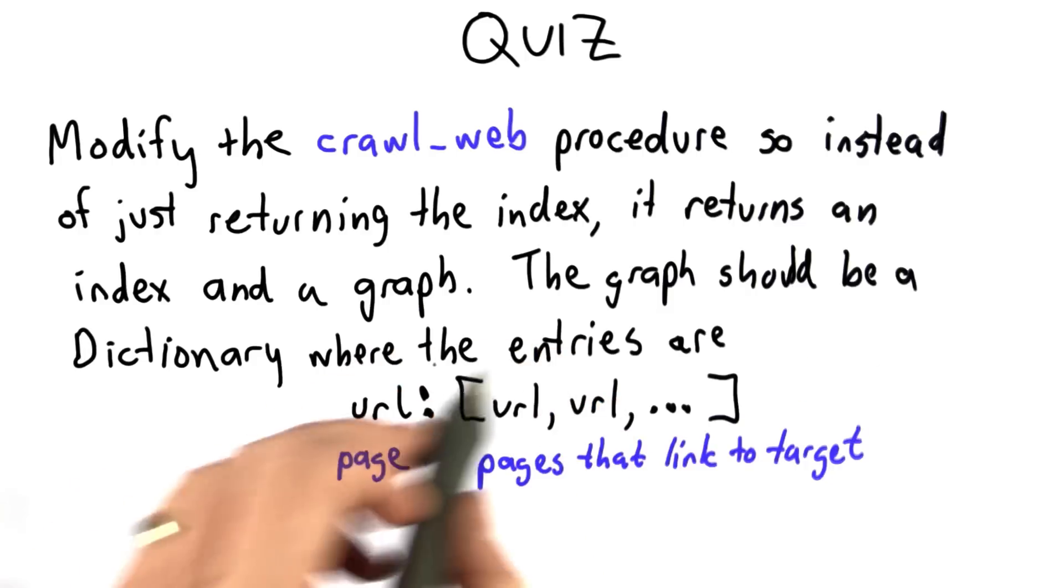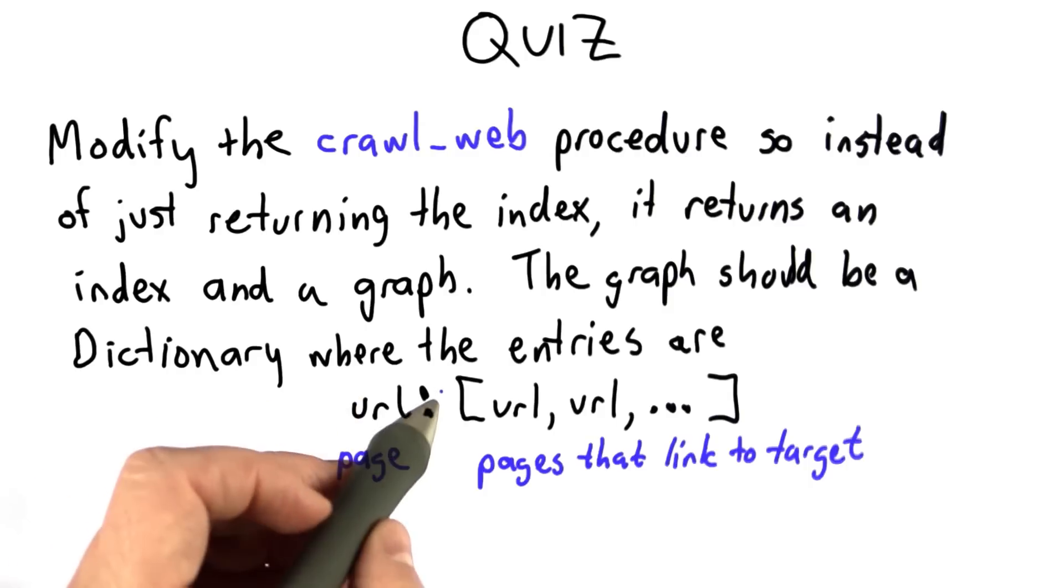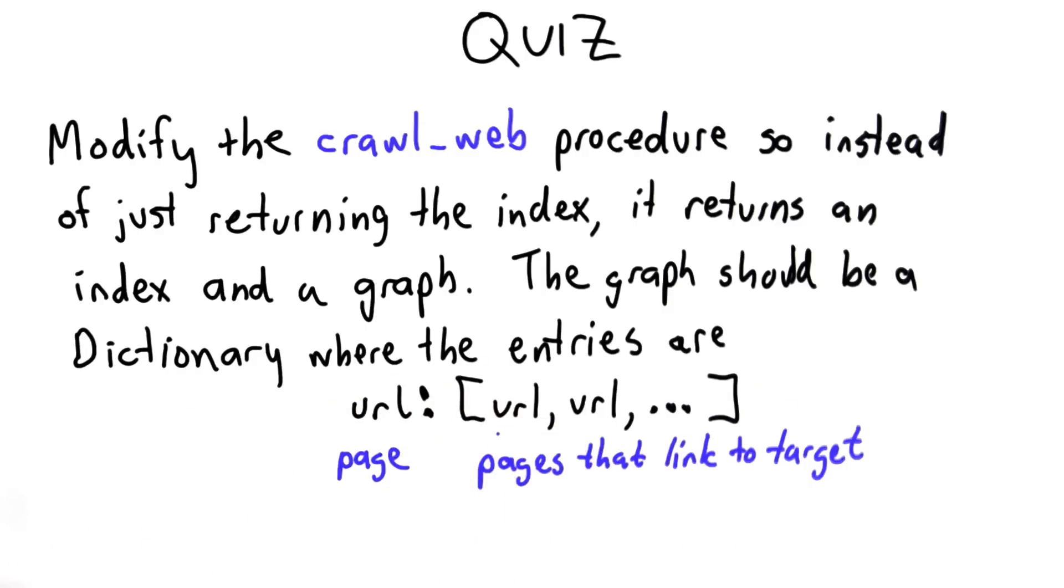The graph should be a dictionary where the entries in the graph are a URL, which is the target page, and a list, which is the pages that link to that target.